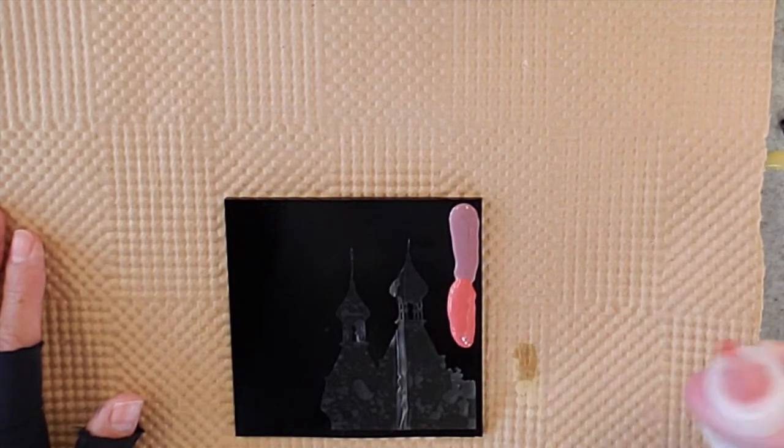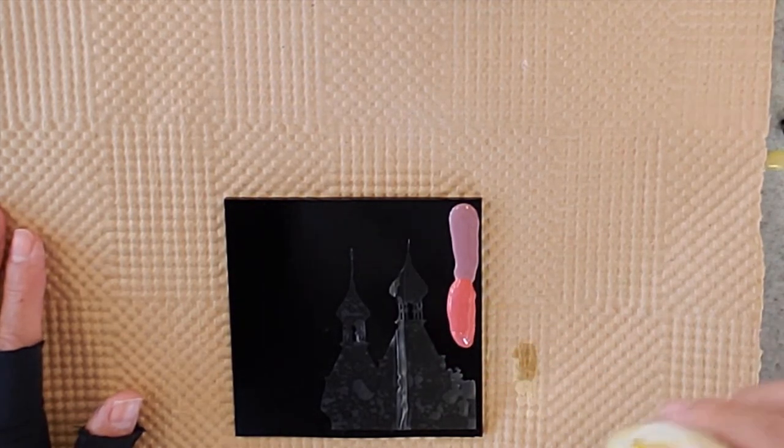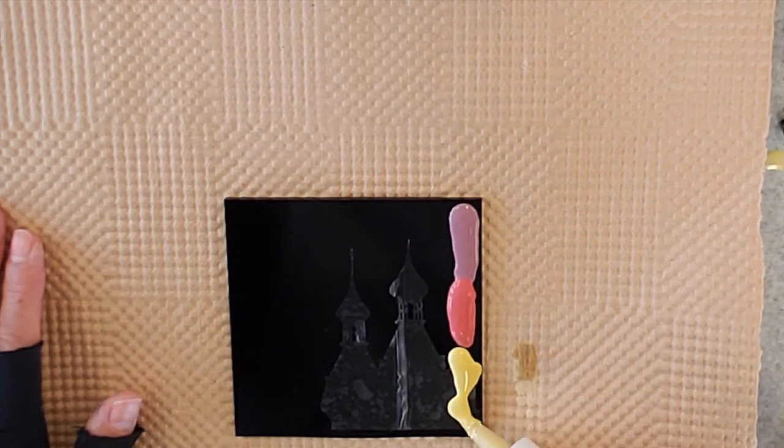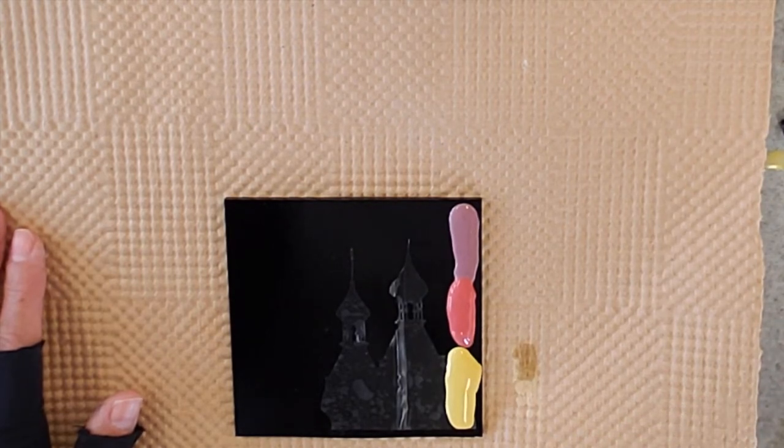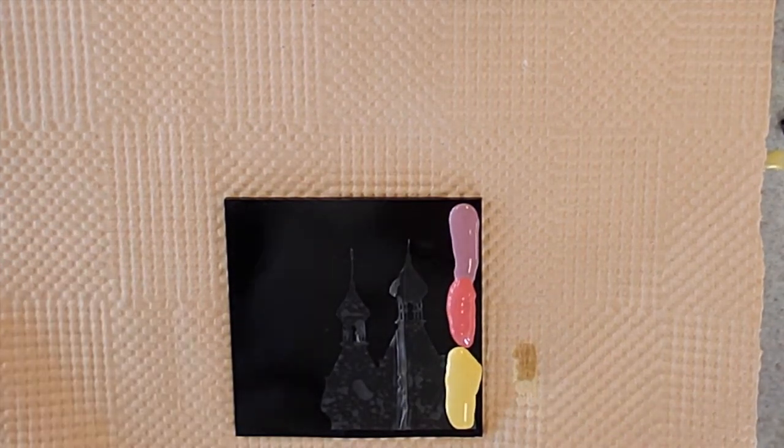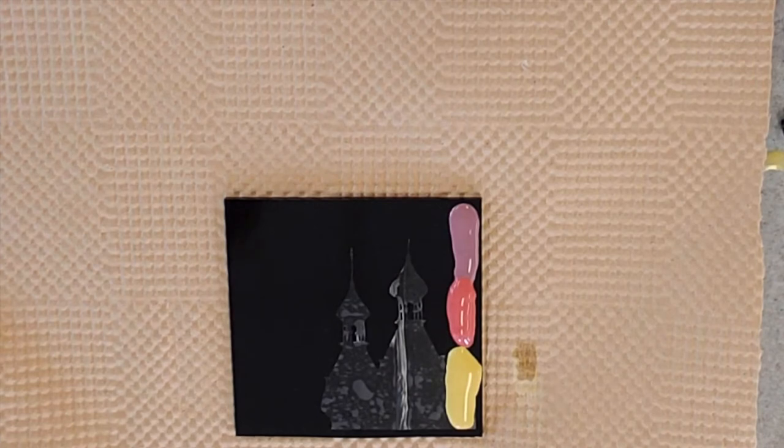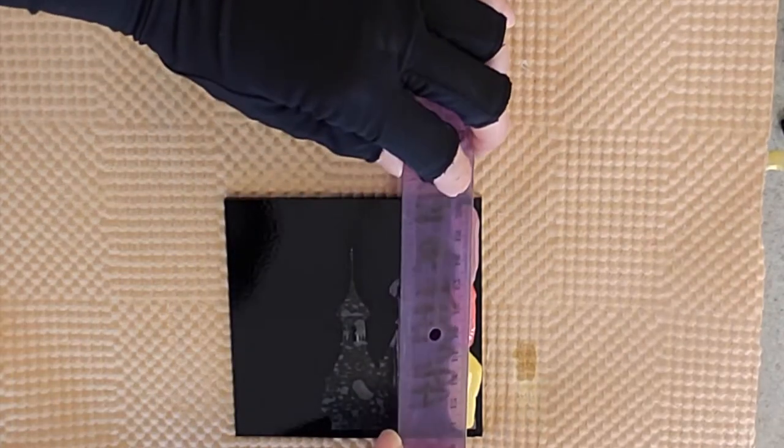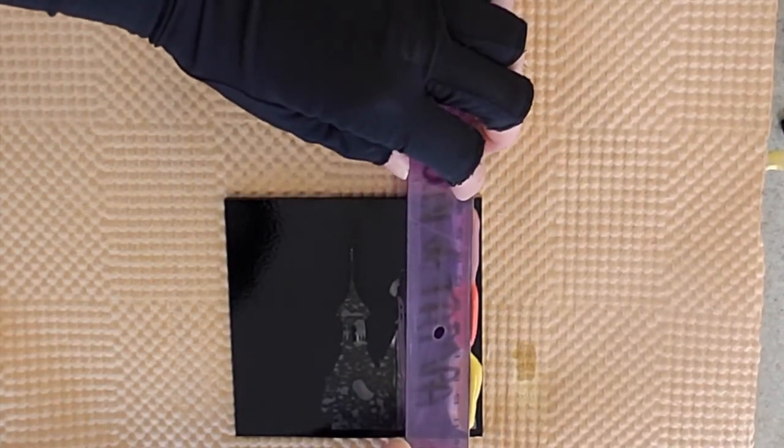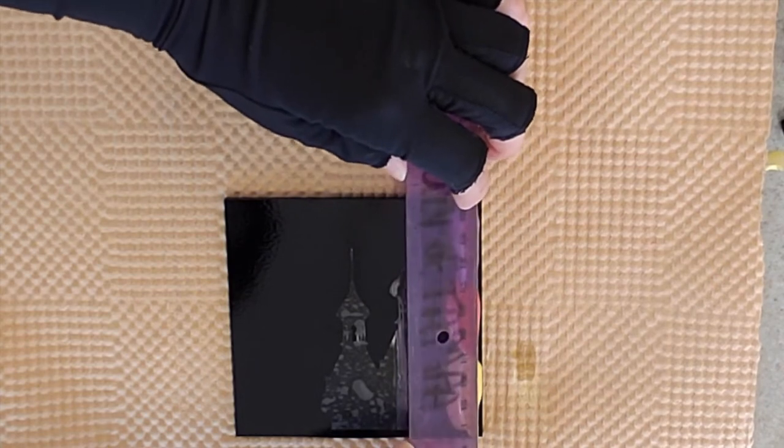I want to make sure that I'm applying enough that it'll reach all the way across the glass when I use my ruler to squeegee, but not so much that I'm going to waste a bunch. If you want, you can have an extra piece of glass on the side that you can apply the excess paint to and use as a component in another design.